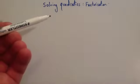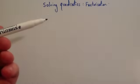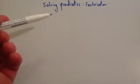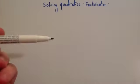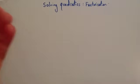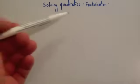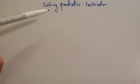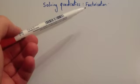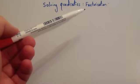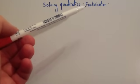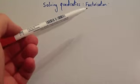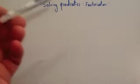In this lesson we're going to look at how to solve quadratics using factorisation. Factorisation is the easiest way to solve a quadratic. The other methods include using the graph, quadratic formula, and completing the square. But if it factorises, that's definitely the quickest and easiest way to do it. Before we start, I'd recommend you look at the videos on factorisation first — if you don't know how to factorise a quadratic, watch that one first.